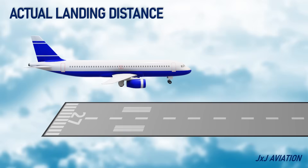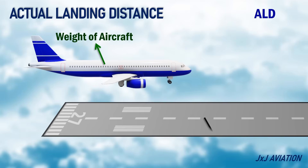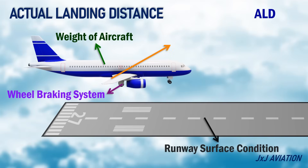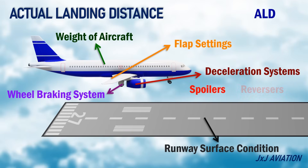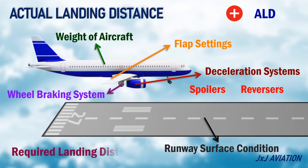Actual Landing Distance, or ALD. The actual landing distance may vary with different conditions such as weight of the aircraft, runway surface condition, the wheel braking system, flap settings, deceleration systems, spoilers, and reversers. When these factors are added to the actual landing distance, we get the required landing distance, or RLD. Let's look at the required landing distance in more detail.